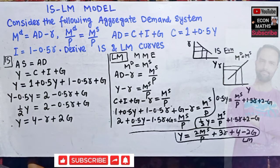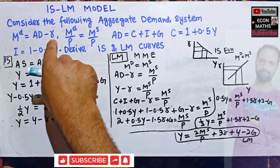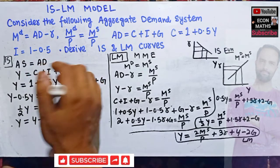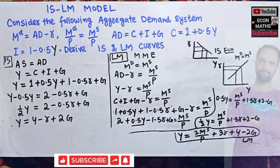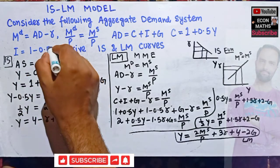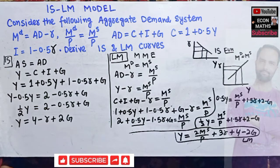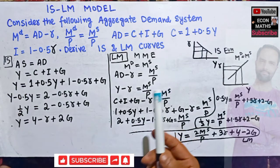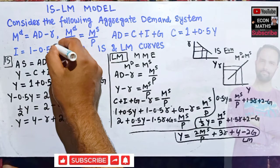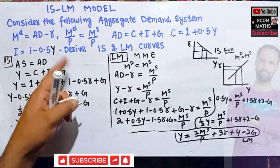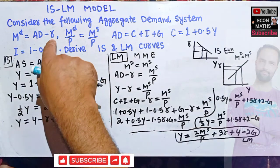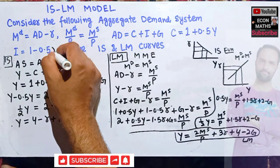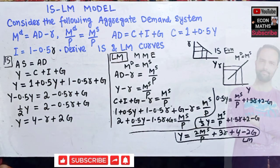To summarize: the IS curve shows a negative relationship between rate of interest and income, while the LM curve shows a positive relationship. Note that in the original question, investment was mistakenly stated as a function of income; I rectified this so that investment is a negative function of rate of interest, which allowed us to solve this correctly. I hope that makes it clear — thank you.